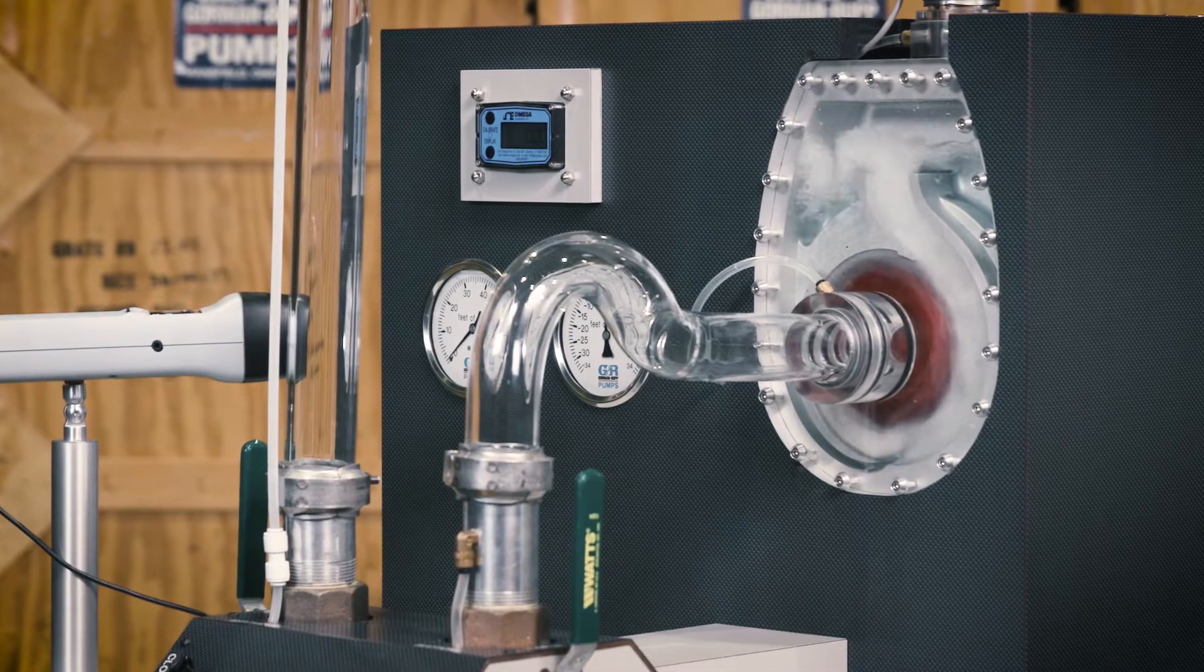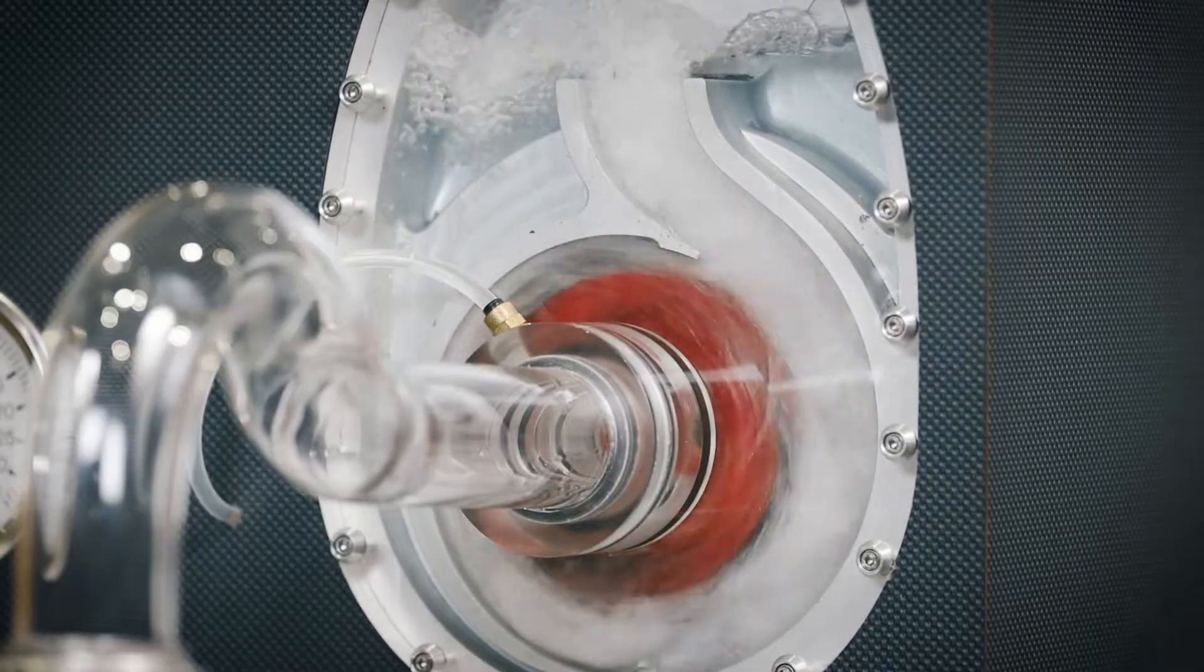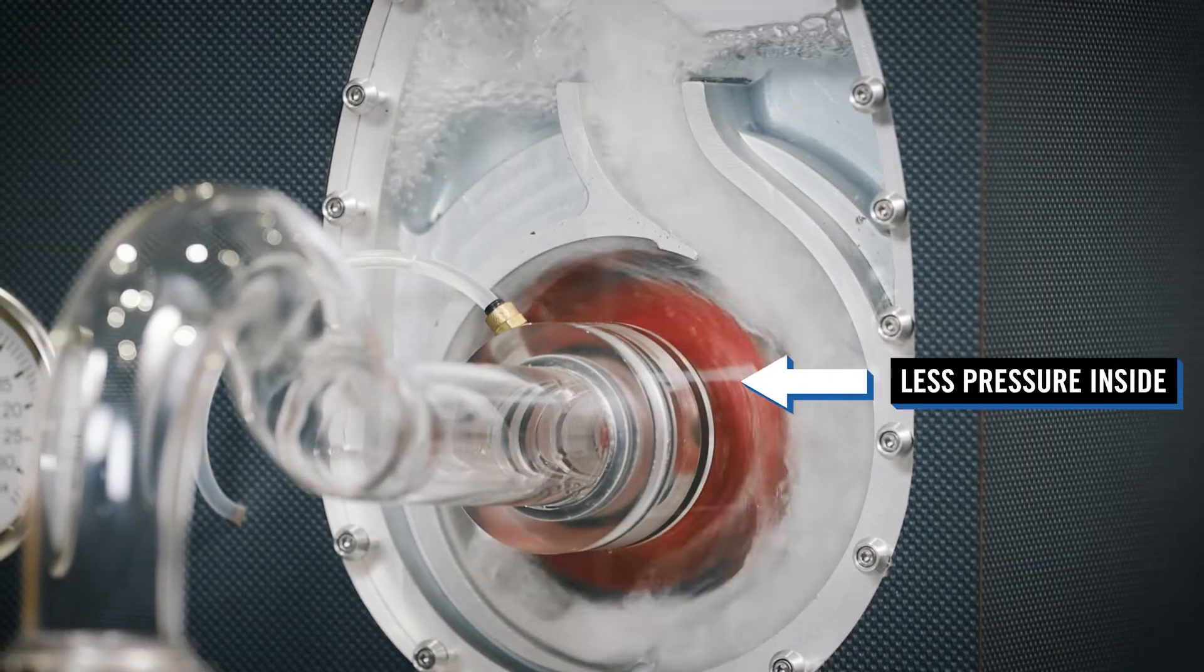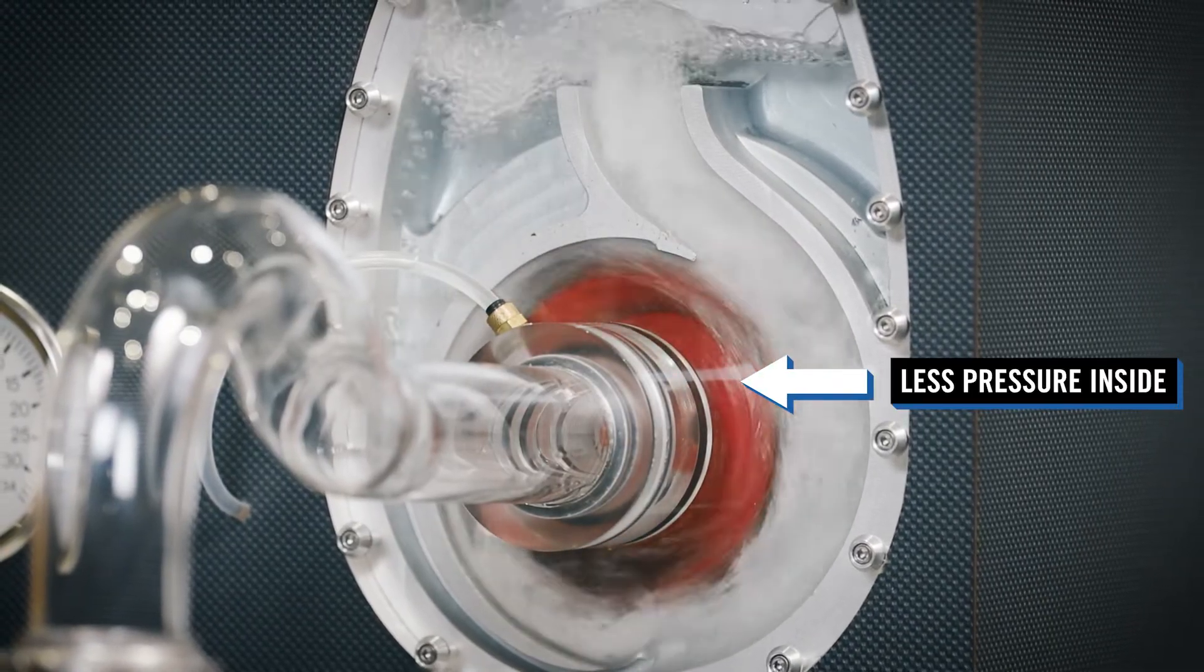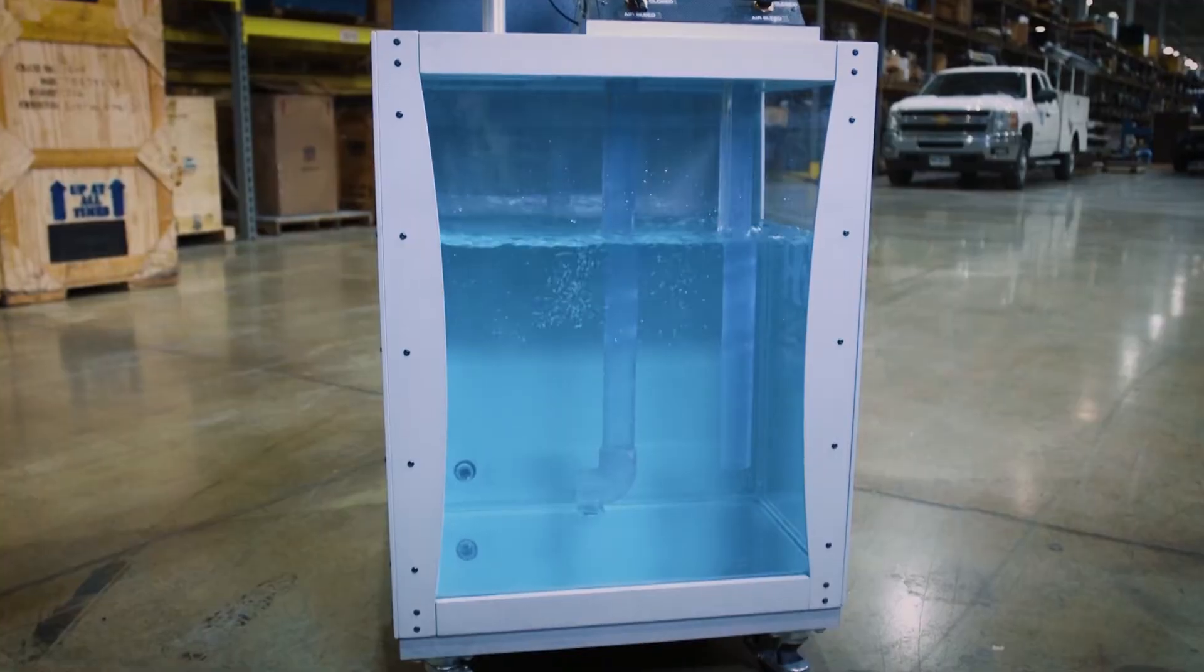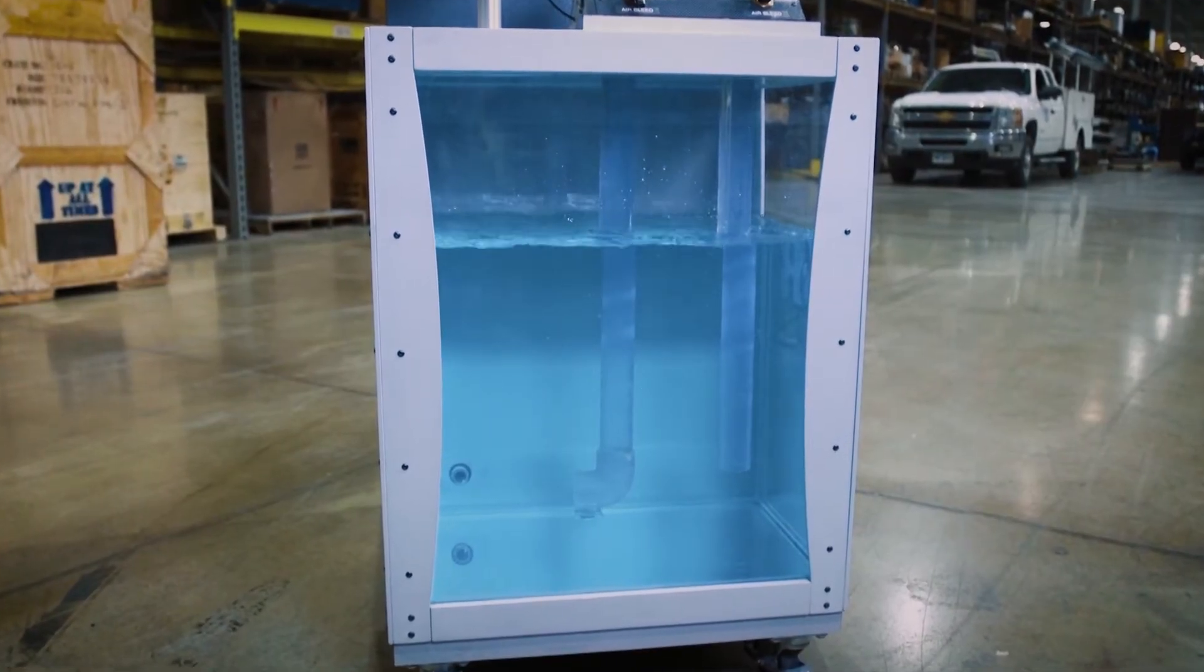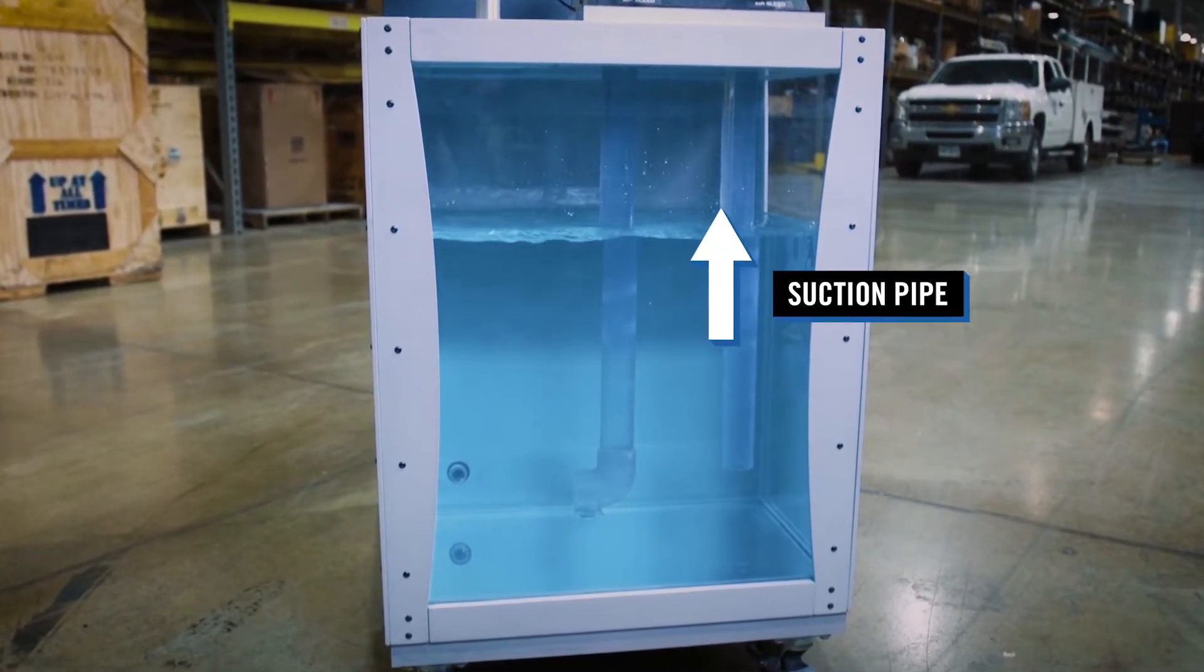After the hydrodynamic seal in the pump is created, the internal pressure inside the pump drops below the pressure outside the pump. The pressure on the surface of the liquid in the tank forces water into the suction pipe.